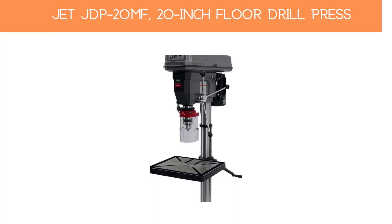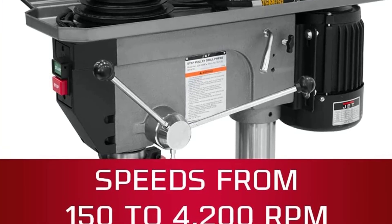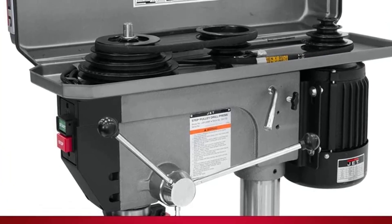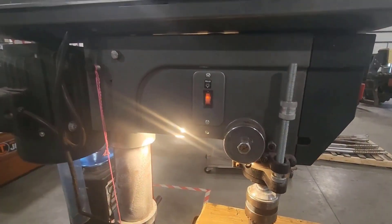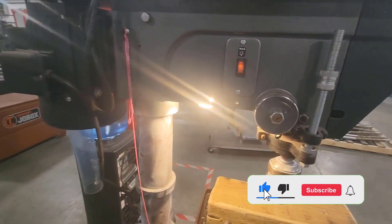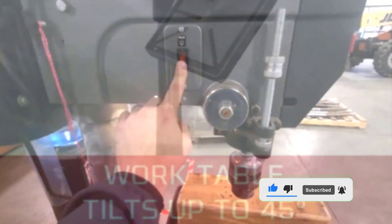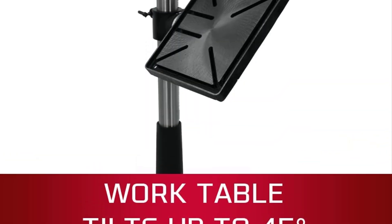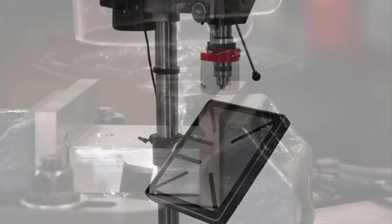Number 3: Jet JDP-20MF 20-Inch Floor Drill Press. This floor drill press by Jet is an absolute powerhouse and perfect for commercial drilling. One of the reasons for it is its 1.5 HP motor that in tandem with its 12 speed settings, 150 to 4200 revolutions per minute, can drill through pretty much everything and anything: metal, plastic, wood, there's nothing this one can't take.